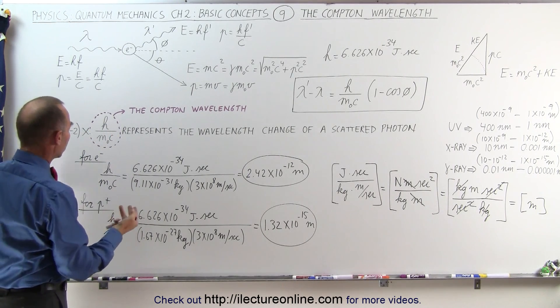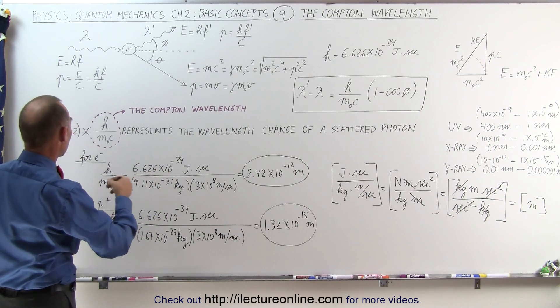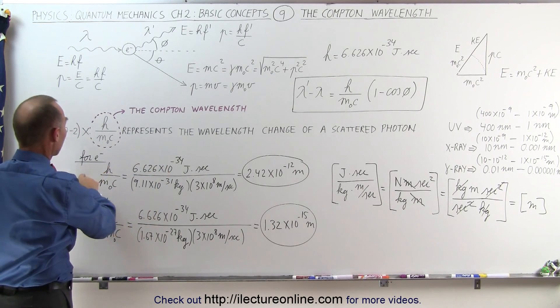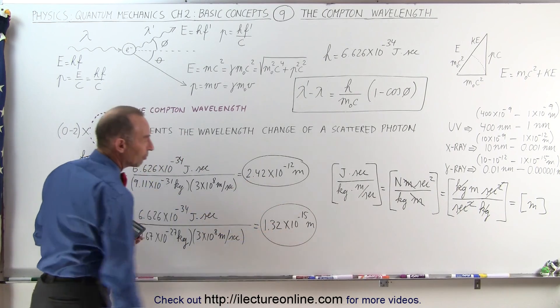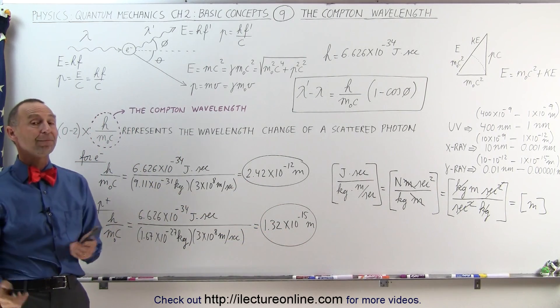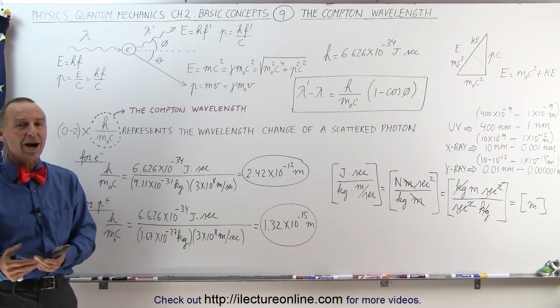And for, let's say, scattering angles of 90 degrees, that value would be equal to this for the scattering off an electron, and this for scattering off of a proton. And that's what we mean by the Compton wavelength. Go for it.